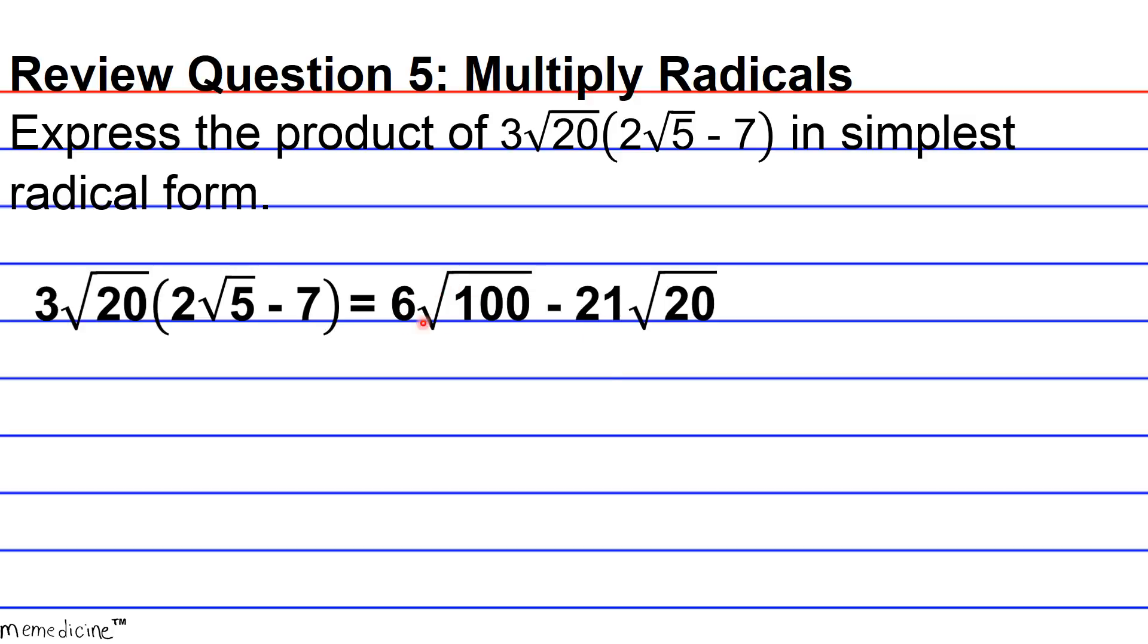Notice we can further simplify the first expression because this is a perfect square. The radicand 100 is a perfect square because 10 squared, or 10 times 10, yields 100. So this portion simplifies to 10.